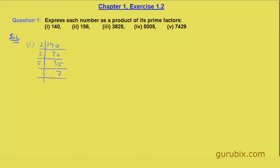And 7 is a prime number — it cannot be divided further, so we get 1 at last. The product of prime factors of 140 is 2 × 2 × 5 × 7. We can also write it as 2² × 5 × 7. This is our answer to the first question.